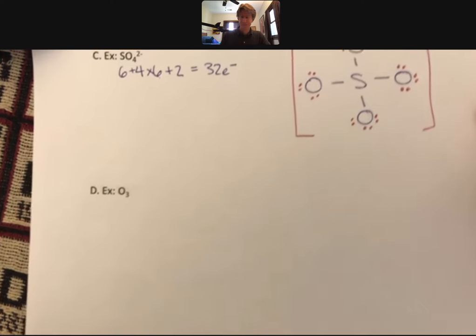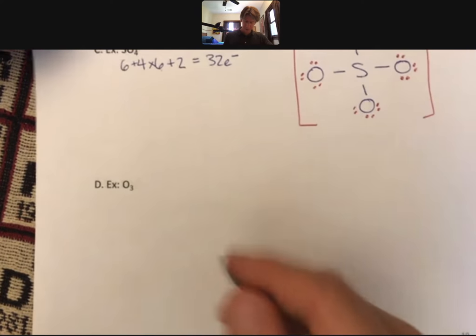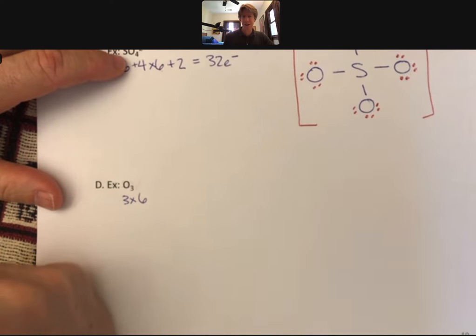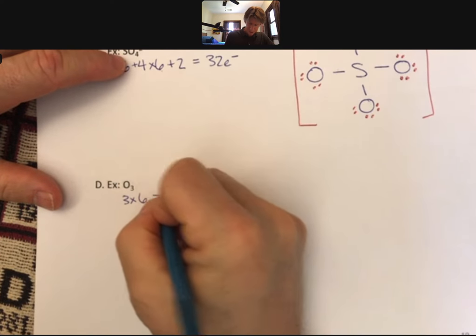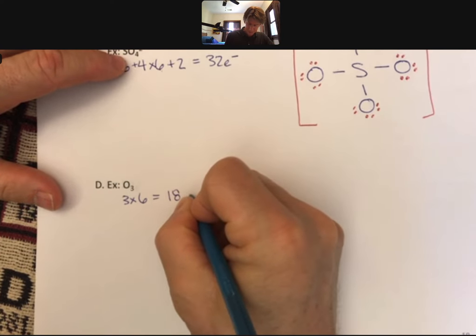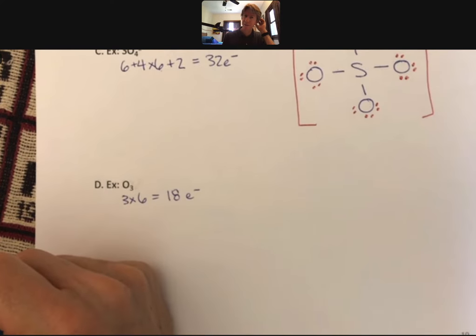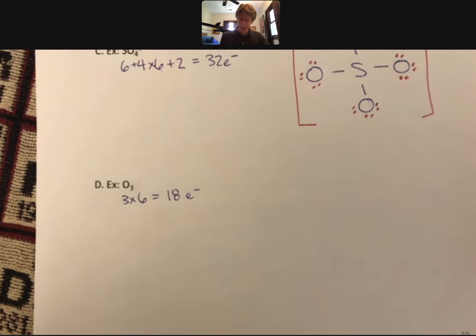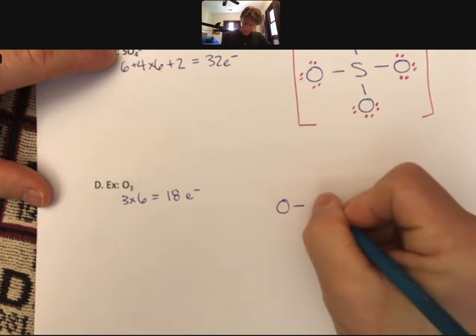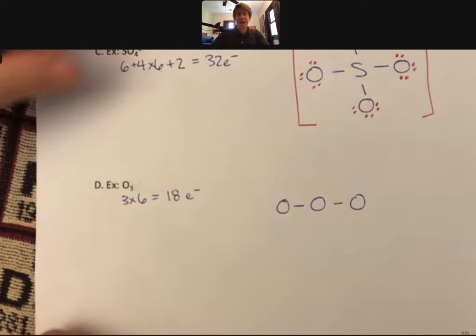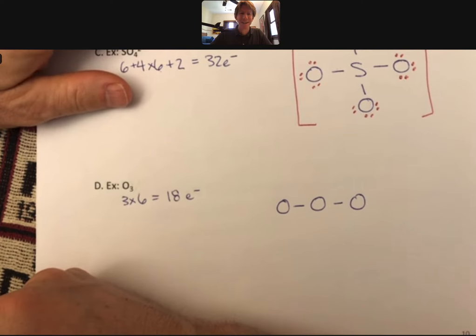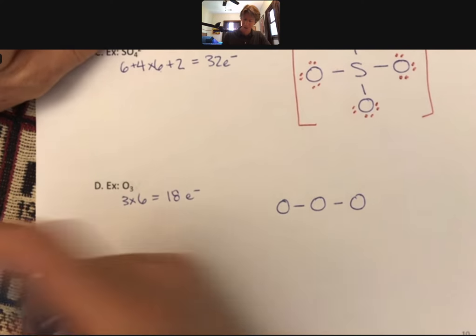Now let's do ozone. Ozone is going to be three times the number of valence electrons for oxygen. That will be 18 valence electrons. In this case, I'm just going to call them electrons again. Now there's only one type of atom, and so oxygen has to be a center atom. That's another weird one here, but that's good that we see it.